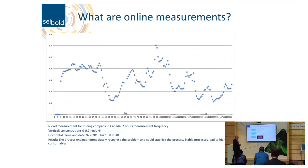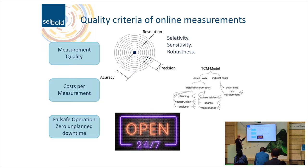We have to talk first about the main criteria for online measurements: measurement quality, cost per measurement, and fail-safe operation. Measurement quality — everyone knows this is about resolution. You can convert resolution to precision and precision to accuracy. It's also about selectivity, sensitivity, and robustness of measurement.